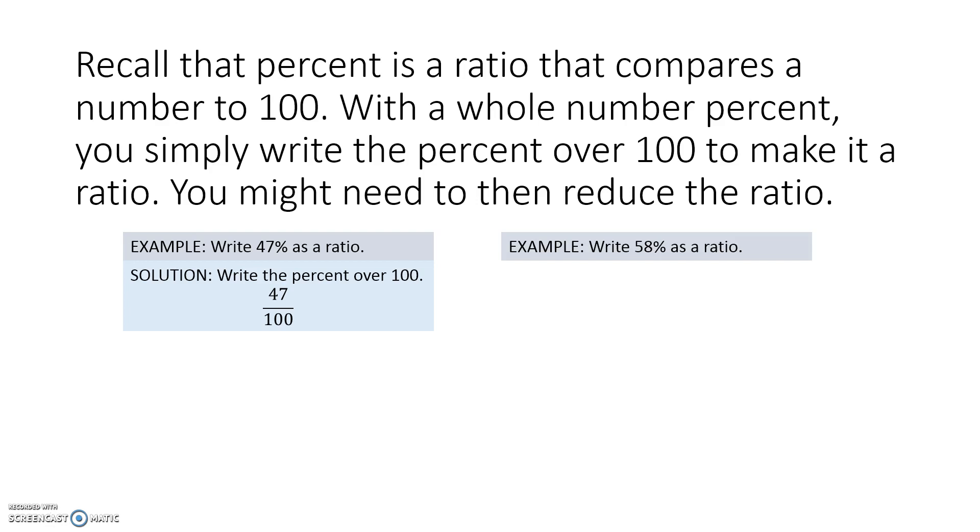Let's write 58% as a ratio. Again, just write the percent over 100, but then you reduce it, and so our ratio is 29 to 50.